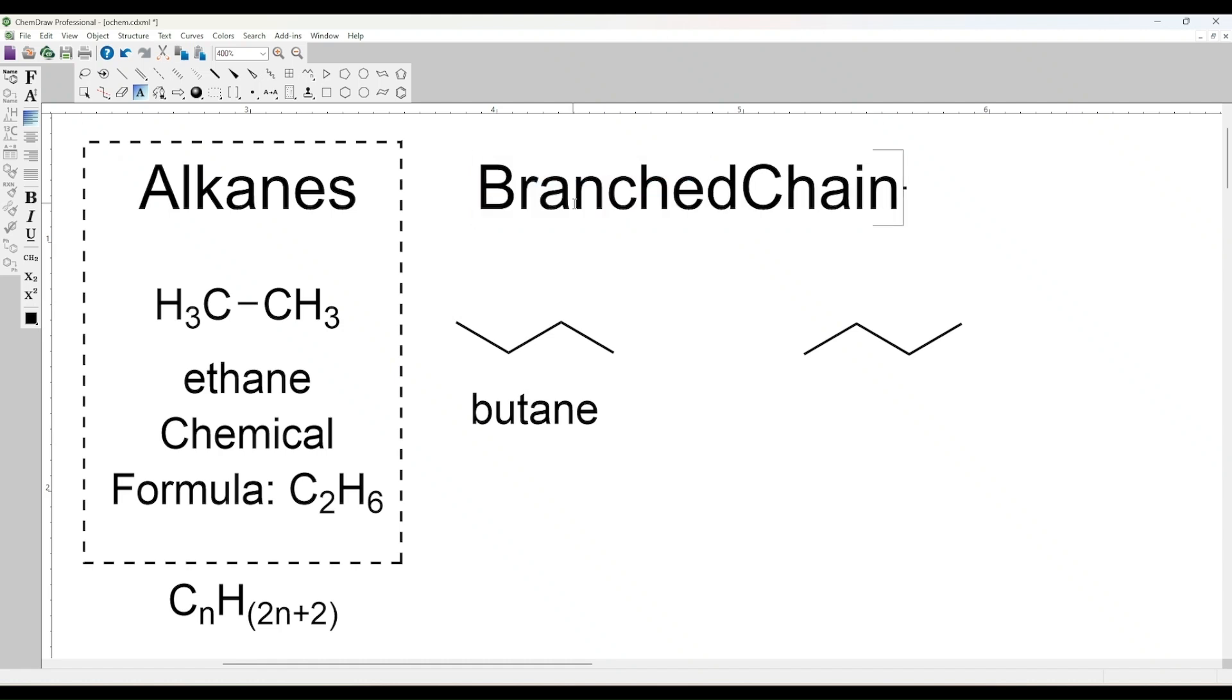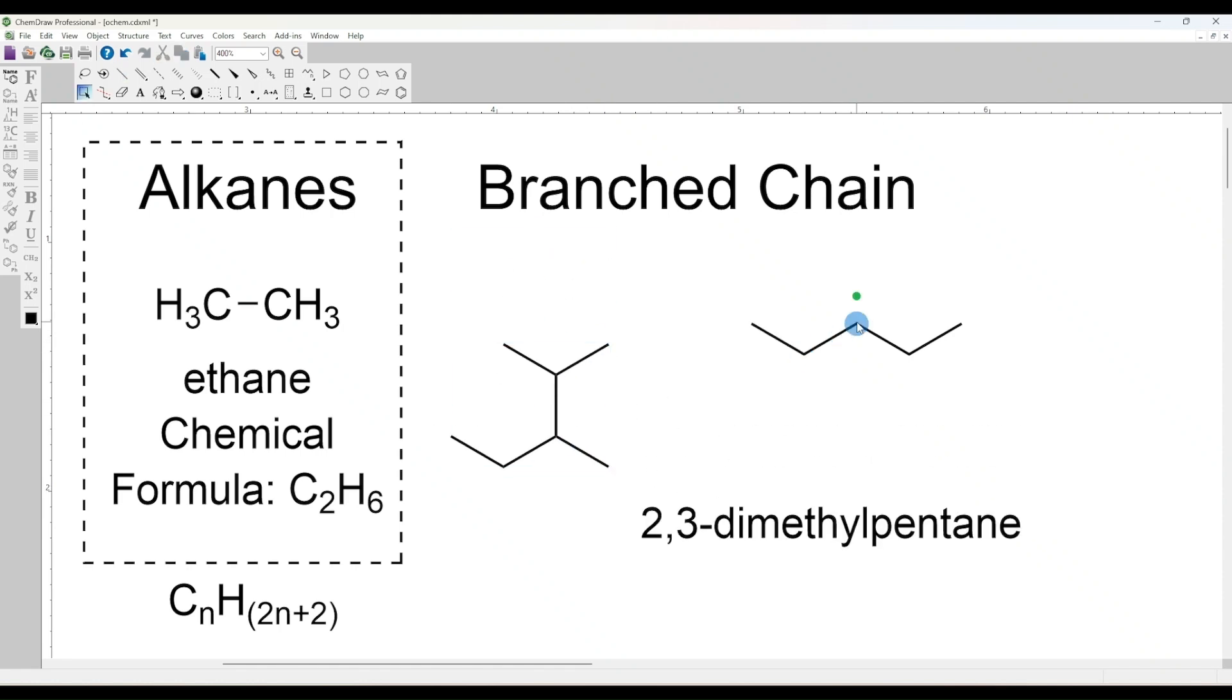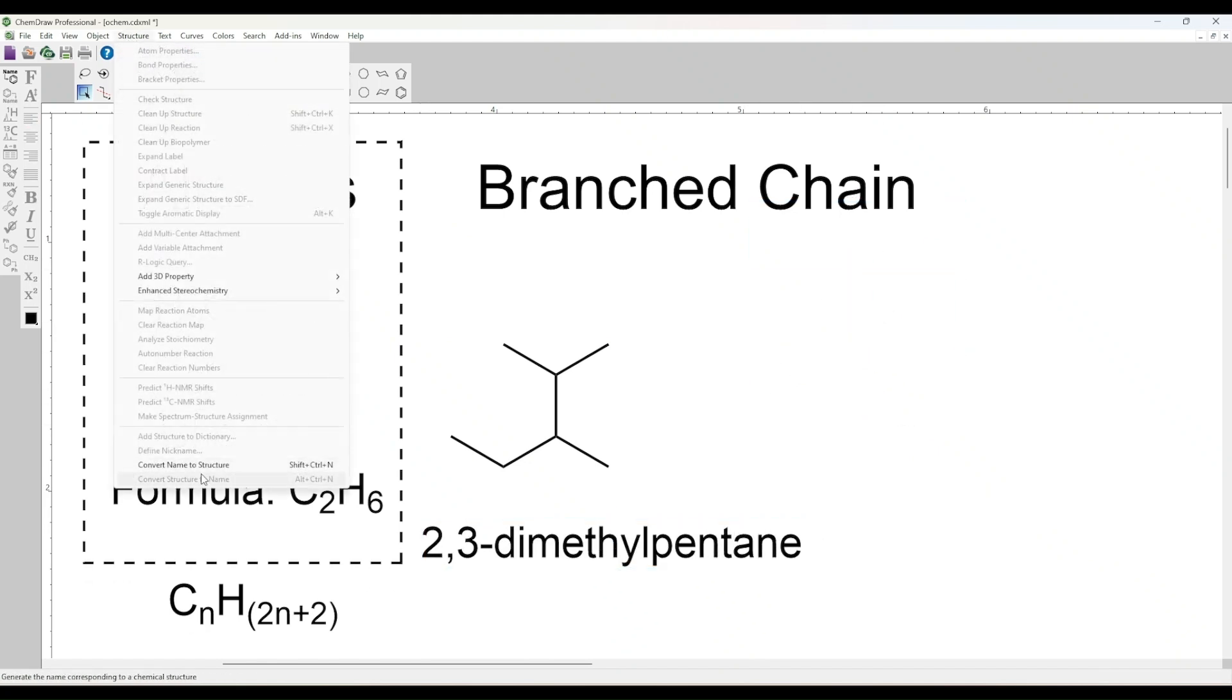Branched chain alkanes have a branching structure where at least one carbon atom is connected to three or four other carbon atoms, such as isobutane.